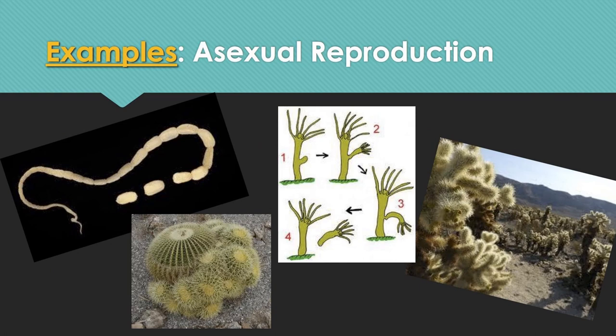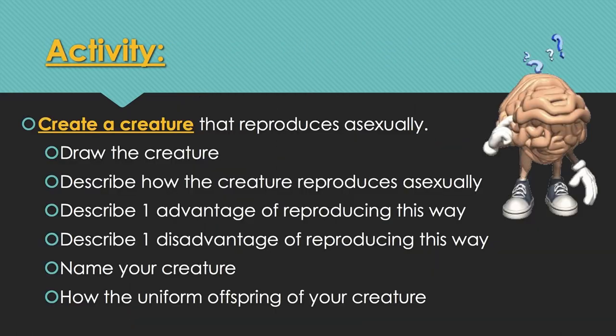Here are some examples of asexual reproduction. Your activity today is to create a creature that reproduces asexually — you can make up your own creature. Draw and name it, describe how it reproduces asexually and which method it uses, describe one advantage and one disadvantage of that method, and show the uniform offspring of your creature. That is your activity for the day, and that is it for the lecture. Thank you.